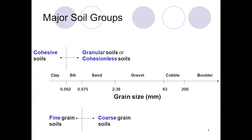Major soil groups consist of two types: cohesive soils and granular soils or cohesionless soils.